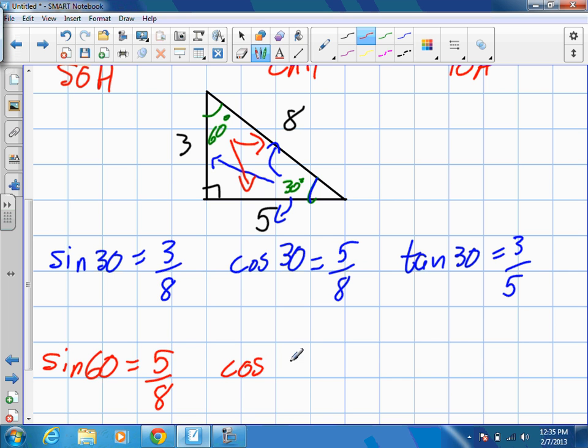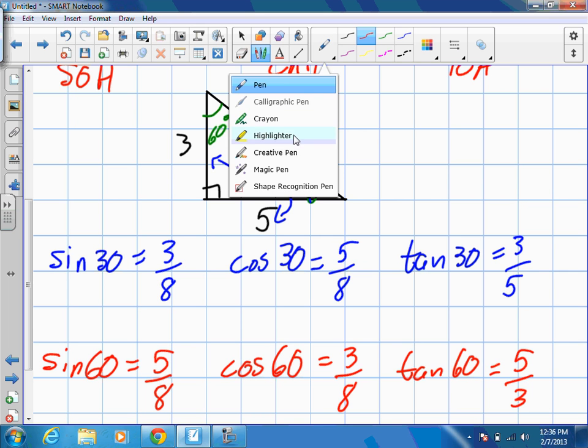Cosine 60 will give us three over eight, because three is now our new adjacent. And tangent 60 will be the inverse of what we had before, so we'll get five over three. Okay, I want you guys to just take a look at these relationships here.